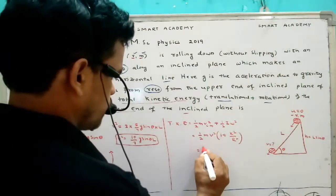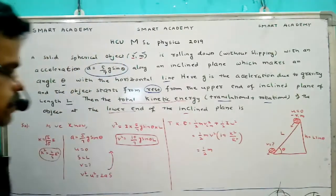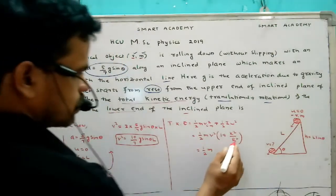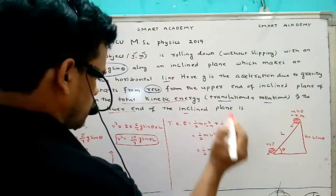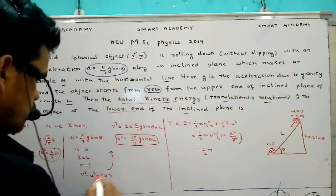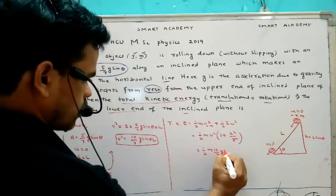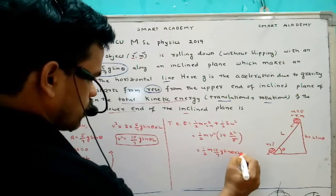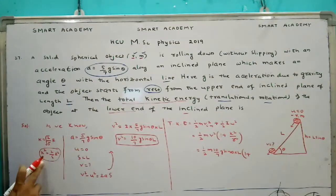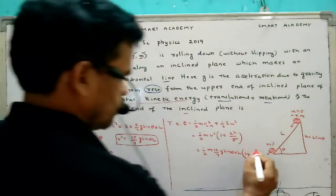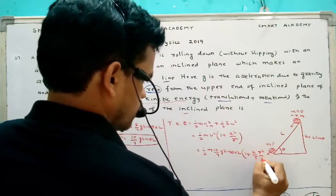So substitute here. M is mass of the spherical object. So I am here substituting capital R. So v equal to v square value already we got: 10 by 7 g sine theta into L, 1 plus K square value for solid sphere, 2 by 5, 2 by 5 R square by R square.